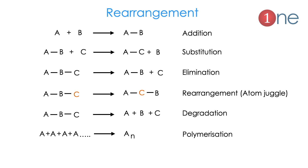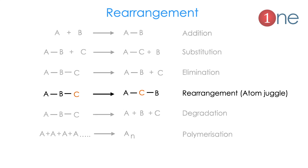First, let us see what is rearrangement. There are many reactions possible in chemistry. Rearrangement means you are juggling the atoms — replacing atoms inside the molecule. Without change in the overall structure, atoms are switched with each other. So ABC becomes ACB. Rearrangement means moving groups within a molecule; it is not mere isomerization. It involves breaking and forming of bonds.